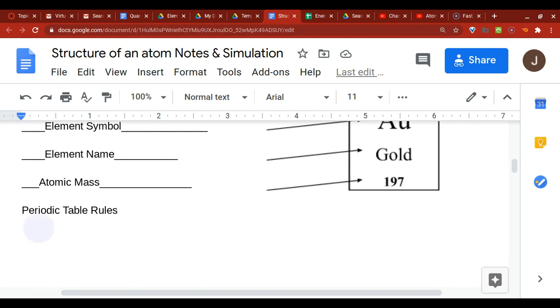So the first rule would be the atomic number is equal to the number of protons, which is also equal to the number of electrons.